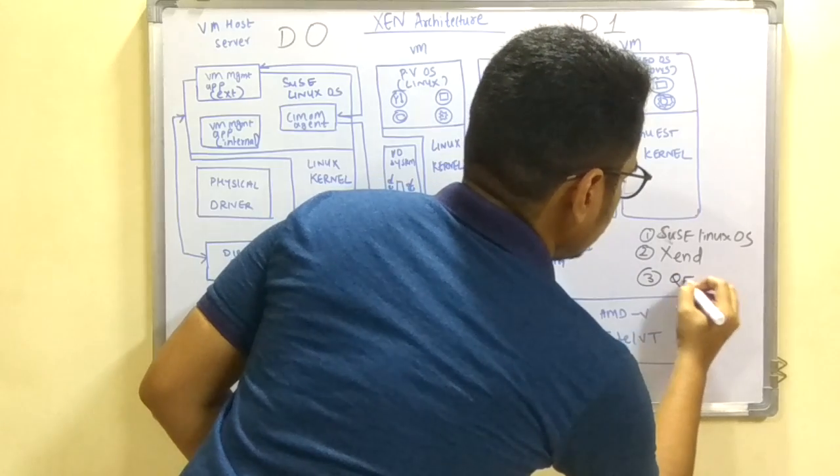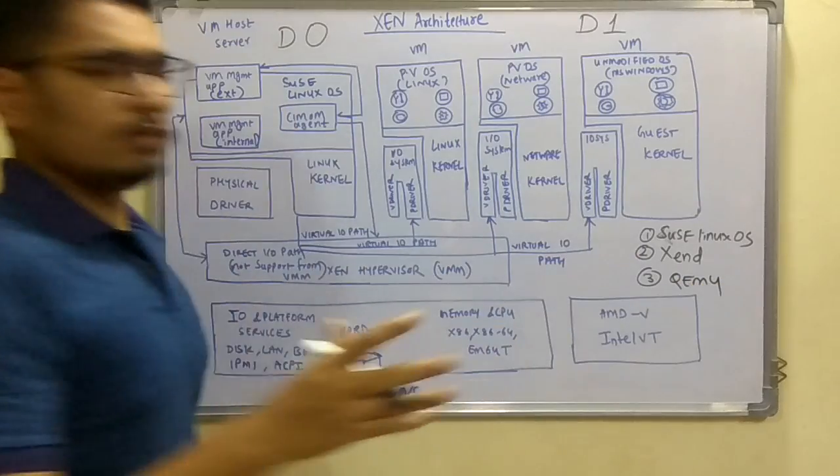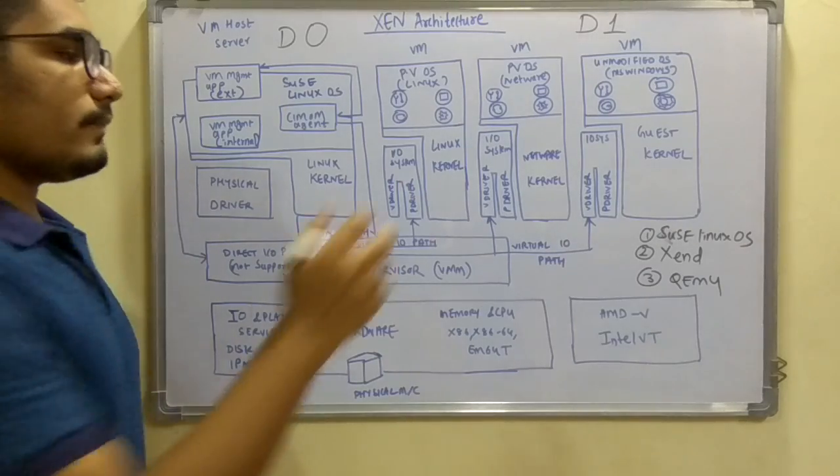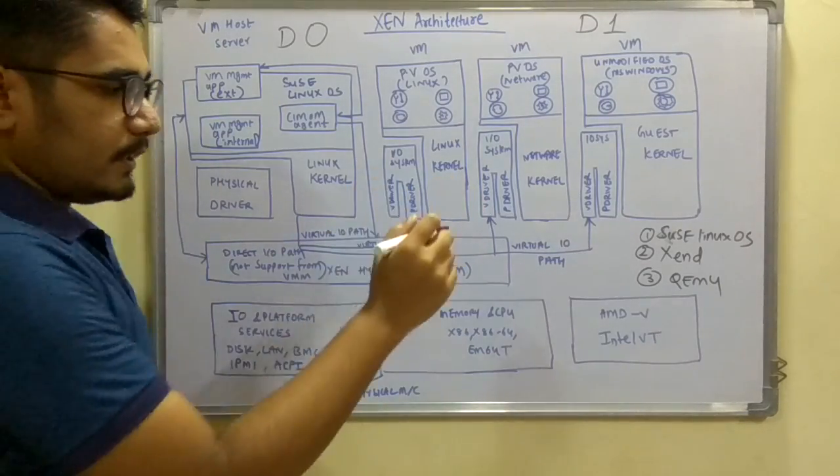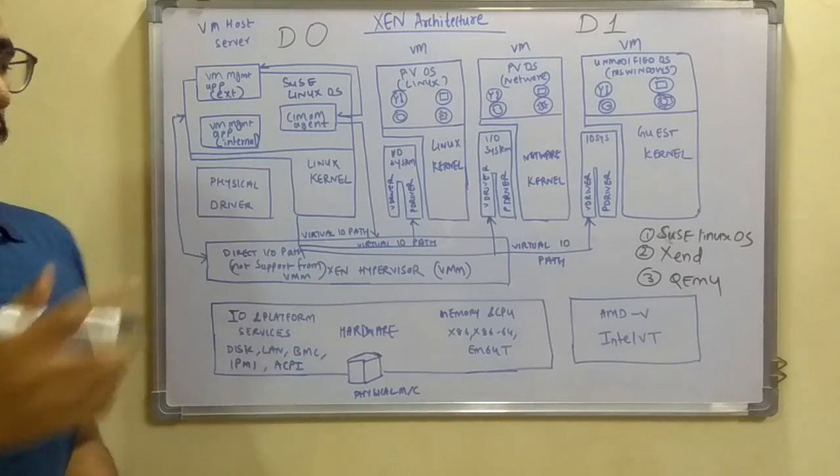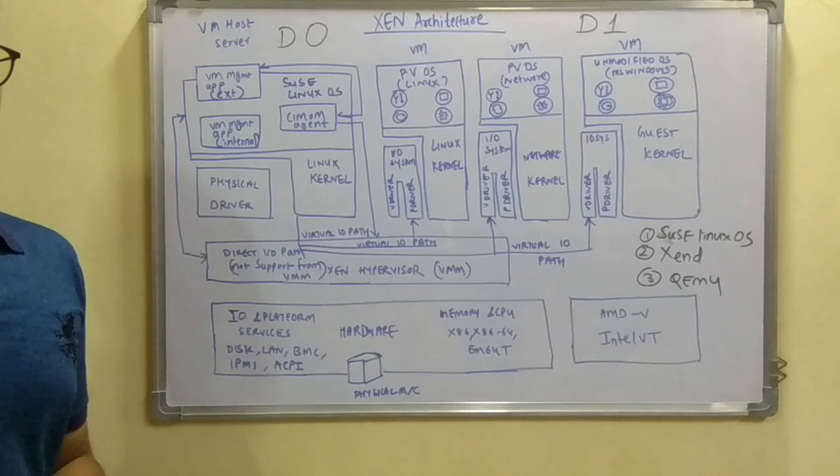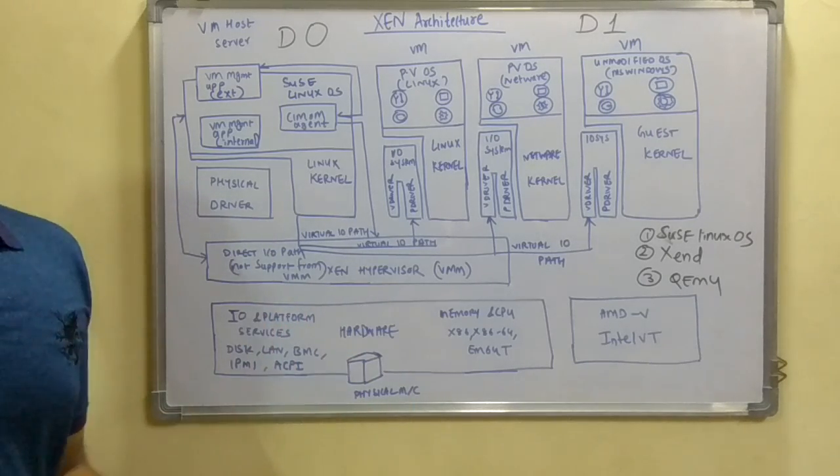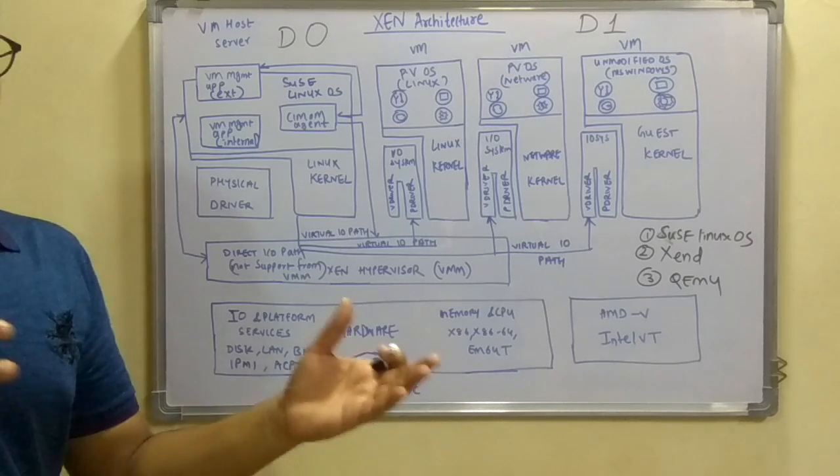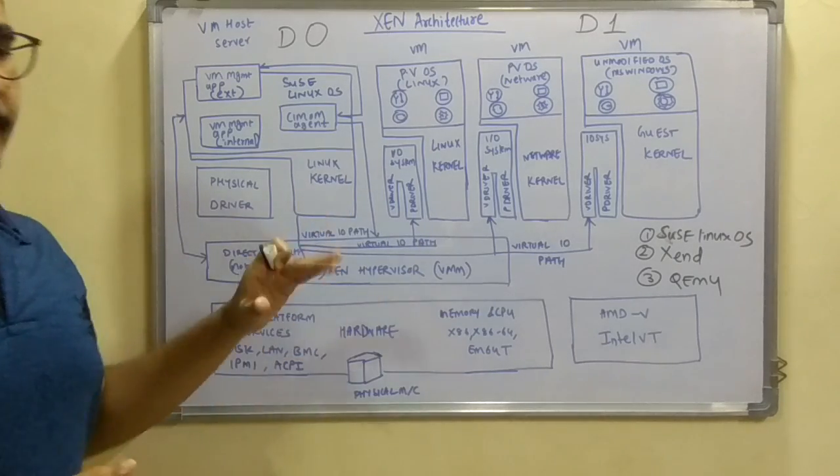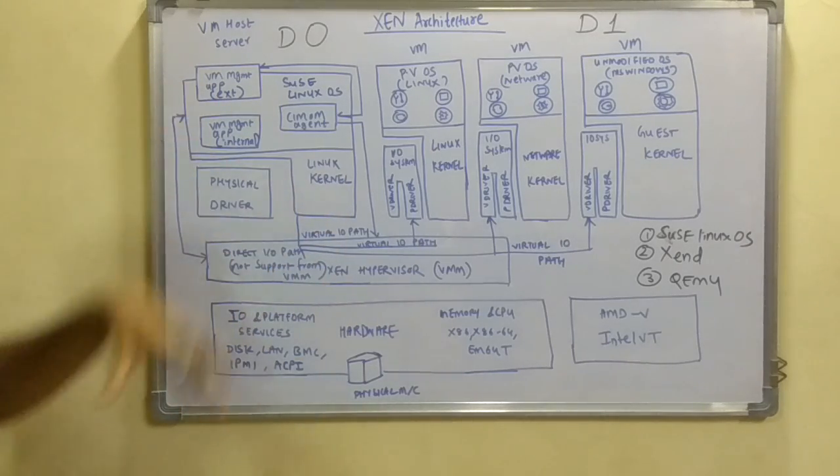Next you have a modified version of QEMU. QEMU I have already discussed in the implementation levels of virtualization. Here not the normal QEMU is used but a modified version. QEMU stands for Quick Emulator. It's like an emulator which can mount a complete computer system on itself, like an Android emulator. So those are the three main components of Domain 0.